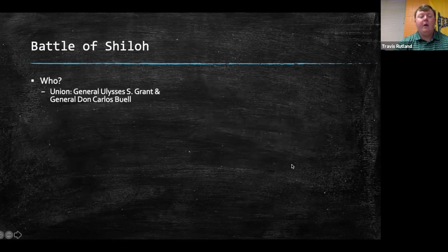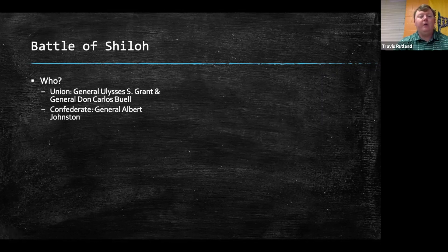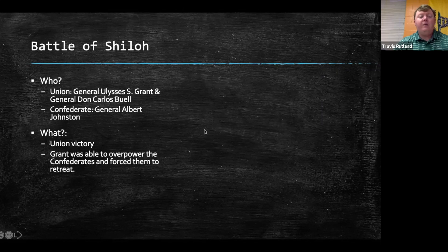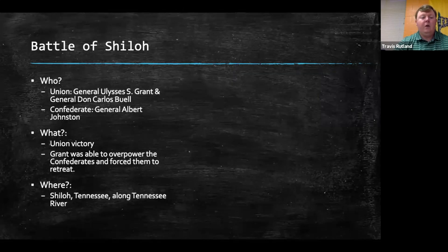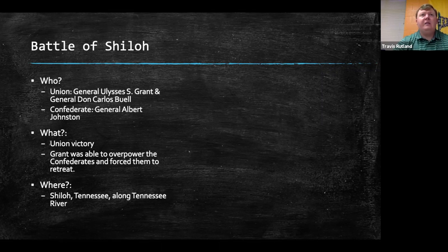At the Battle of Shiloh, we see Union General Ulysses S. Grant and Don Carlos Buell. On the Confederate side, we see General Albert Johnston. There was a Union victory at the Battle of Shiloh — Grant was able to overpower the Confederates and force them to retreat. Shiloh is in Tennessee, along the Tennessee River in the western part of the state. This took place on April 6th, 1862.